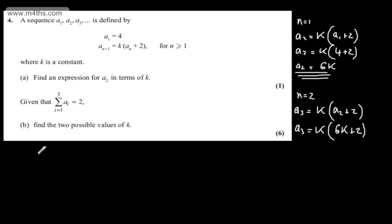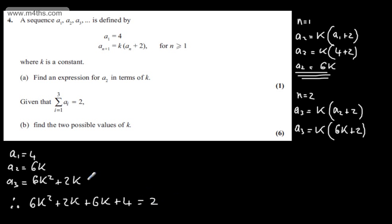If we now consider what we have, we've got a sub 1 that gives us 4. We've got a sub 2 which is 6k, and a sub 3, which if I expand out will be 6k squared plus 2k. Therefore I can add this together and set it equal to 2. We have 6k squared plus 2k plus another 6k plus 4 equals 2, simply summing a sub 1, a sub 2, and a sub 3.